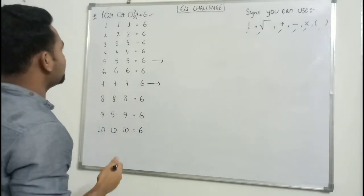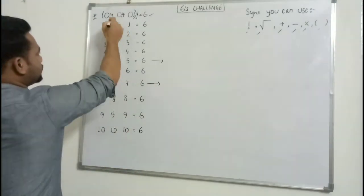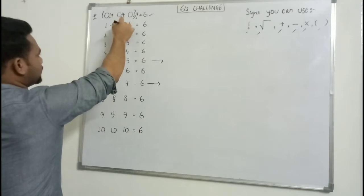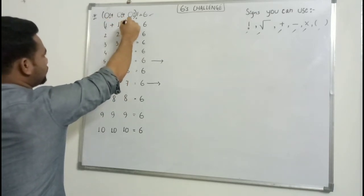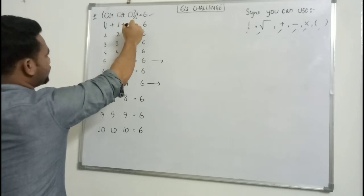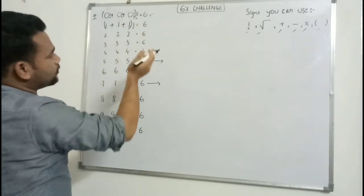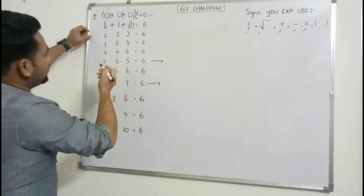Let's go for one. One plus one plus one gives three, then I will give bracket and a factorial. Three factorial is six.